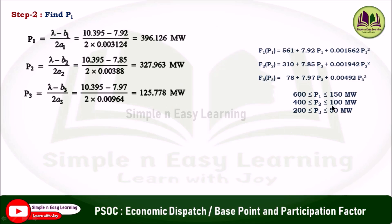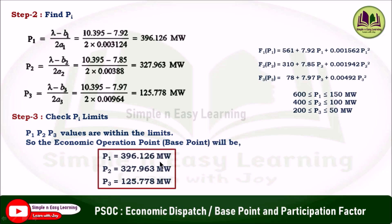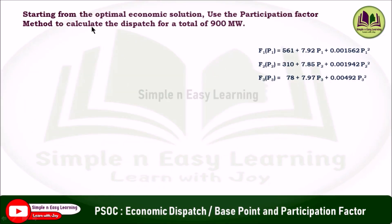Step 3: Check Pi against limits. P1 limits are 150 to 600 — P1 = 396.126 MW, within limits. P2 limits are 100 to 400 — P2 = 327.963 MW, within limits. P3 also lies within its limits. So the economic operating point (base point) is: P1 = 396.126 MW, P2 = 327.963 MW, P3 = 125.778 MW.